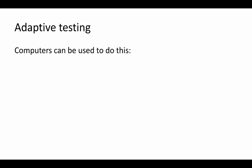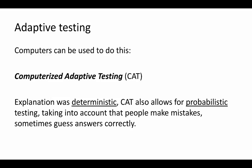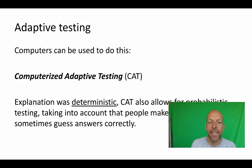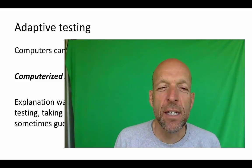This is called adaptive testing, and it can be done by computers. Computers select the correct item in order to reduce the number of items given to individuals. The explanation given here was very deterministic because we dealt with almost perfect items, but computerized adaptive testing can also be used for more probabilistic testing, taking into account that people make mistakes and sometimes guess correctly. In this micro lecture, I introduced the idea of an item bank with known item difficulties and item specificities, and the idea of computerized adaptive testing.